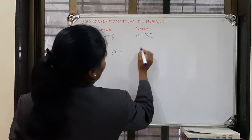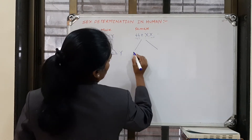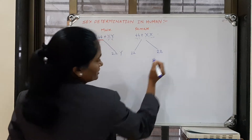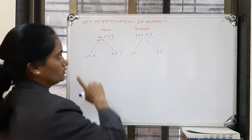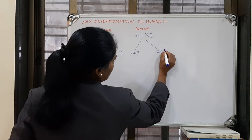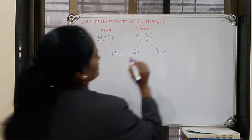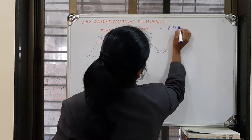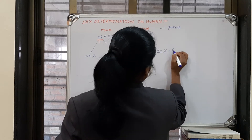In females, the 44 autosomes also get divided into 22 and 22. And both gametes each carry an X chromosome, since females have XX. So female gametes are of only one type: 22 autosomes plus X.